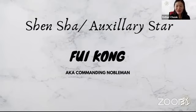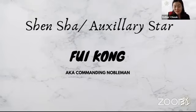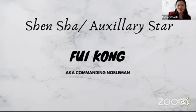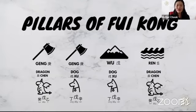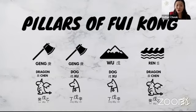If you want to identify and read the classics, you can look at this as Fui Gong, Kui Gong, Bright Star, or even Master Spirits — there are many different terms depending on which classic and which master you're referring to. Basically, whenever it comes to Fui Gong, you first need to identify what these pillars are. There are four different types of Fui Gong pillars: Geng Chen, Geng Xu, Wu Xu, and Ren Chen. Do any of you have these in your chart? I personally have two in my chart.